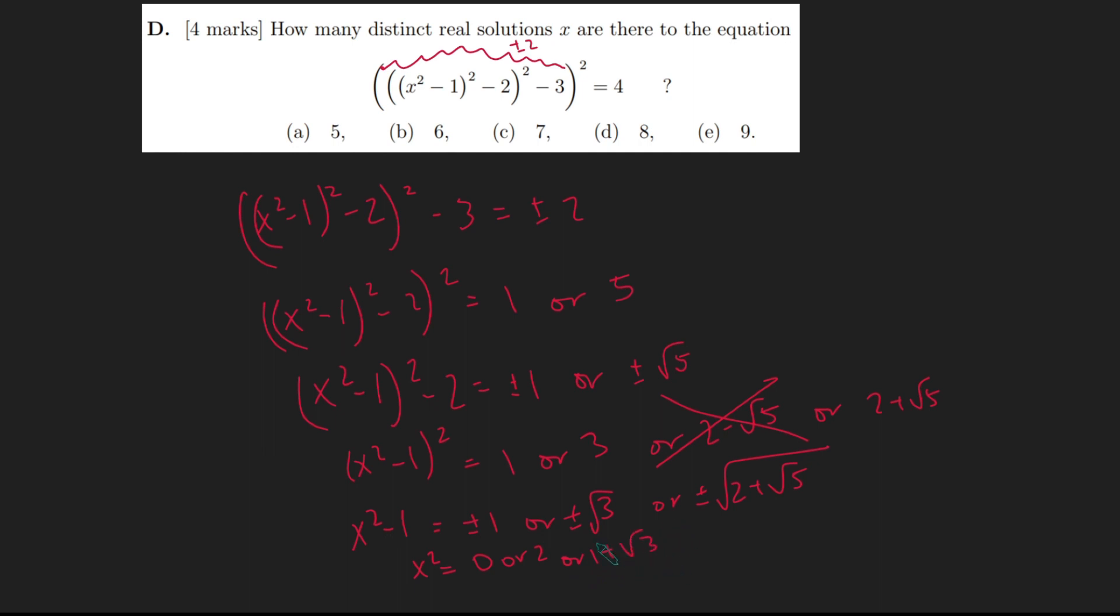However, it can't be 1 minus root 3 because again that would be negative and x squared can't be negative, or 1 plus root 2 plus root 5 because again x squared can't be negative. So I can't take the minus option here because that would be a negative number.